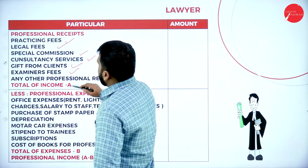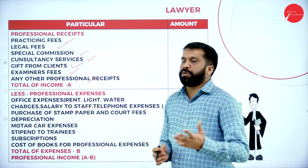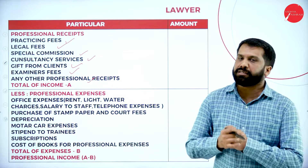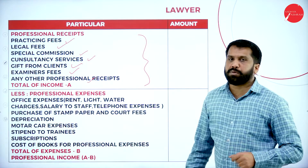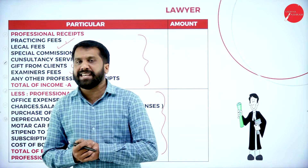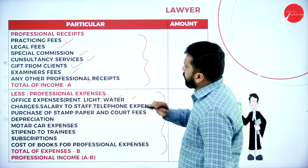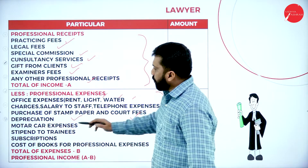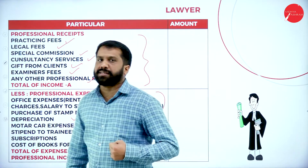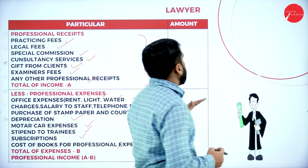Gift from clients and examination fees are also professional receipts for a lawyer. Examination fees means you may act as invigilator or evaluator for junior exams — that income is examination fees and part of professional receipts. The professional expenses for a lawyer are similar to those of a chartered accountant: office expenses like rent, light, water, purchase of stamp paper, depreciation, motor car expenses, stipend, subscription, and cost of books for profession. Total income minus total expenditure gives your final answer.